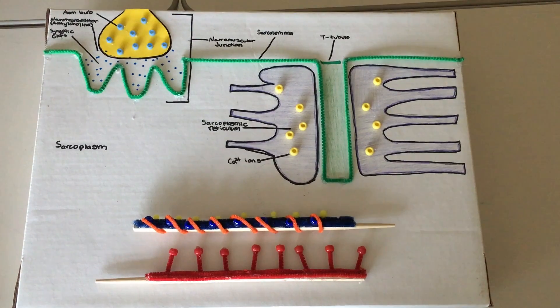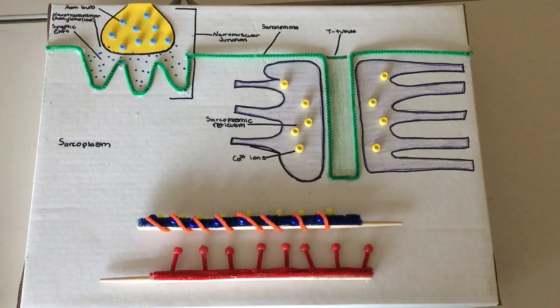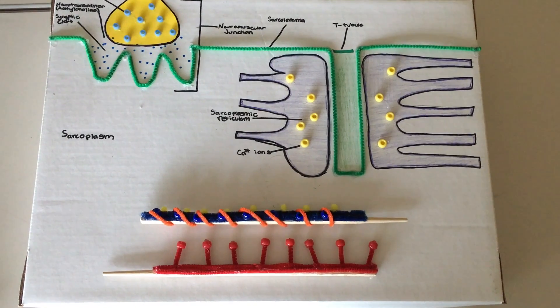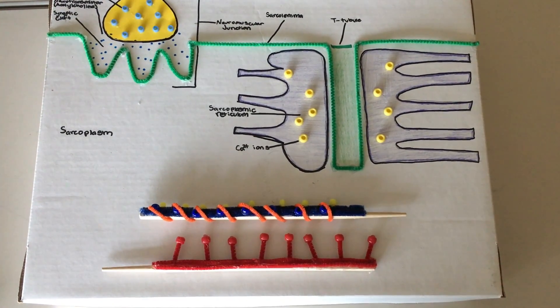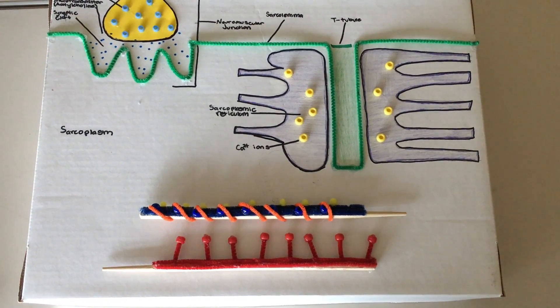As sodium ions enter, voltage-gated channels open, regenerating another action potential. The sarcolemma will then convey this electrical signal along its length where it will then be able to propagate down the T-tubule.